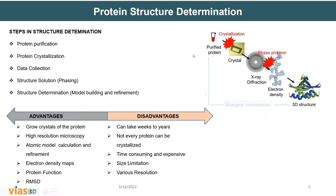If there is any problem with crystallization, you have to go back to the purification step, change the process, and return to crystallization. For X-ray diffraction, if there is any phase problem or changes in the diffraction, you have to restart from the purified protein stage. This is how experimental protein structure determination works.